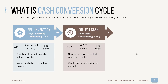Then you add your days sales outstanding, or DSO. DSO is the number of days it takes you to collect your cash. The formula is accounts receivable divided by your sales times your number of days. Similar to DIO, you want this to be as small as possible.